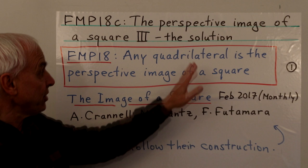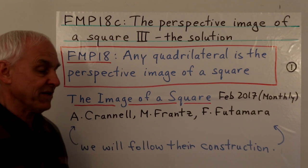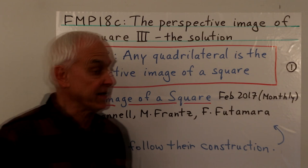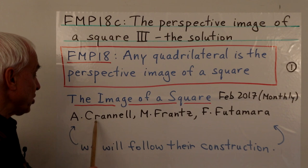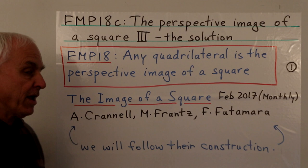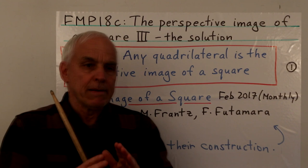Hello everyone, I'm Norman Wahlberger. In this video we are going to present a solution to the famous mathematical problem that any quadrilateral is the perspective image of a square. We've been preparing for that by reviewing some interesting and important topics in projective geometry. The solution I'm going to present is due to three mathematicians: Lisa Crennell, Mark France, and Fukimo Futamara. The paper is 'The Image of a Square,' which appeared in 2017 in the Monthly.